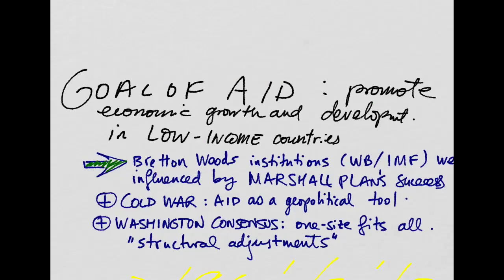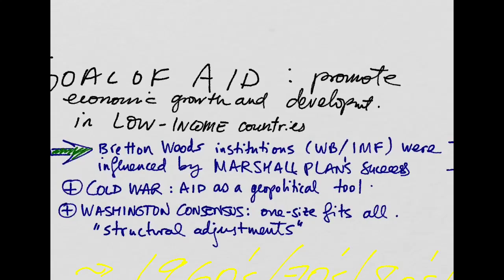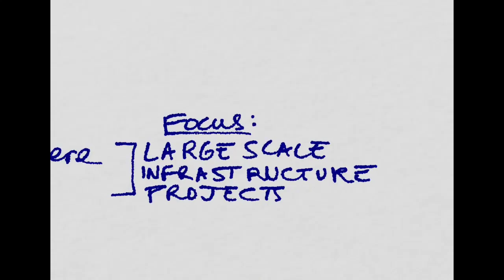In theory, the basic goal of aid is to promote economic growth and development in low-income countries. The main drivers of aid over the last few decades have been the institutions that were born after the Second World War — the World Bank and the IMF. Initially, the goal was to replicate the success achieved with the Marshall Plan reconstructing Europe after the war, with a focus on large-scale infrastructure projects and investment in physical capital.